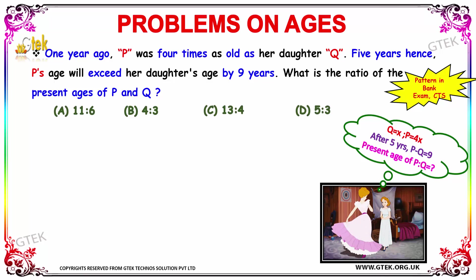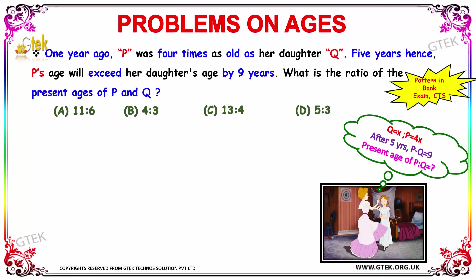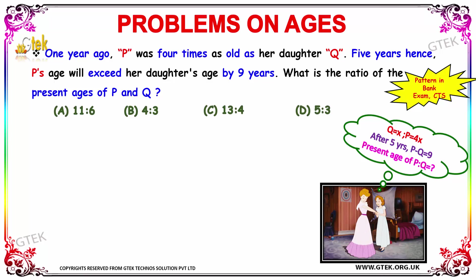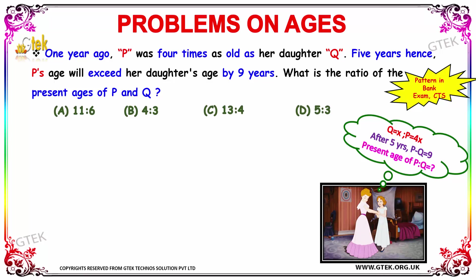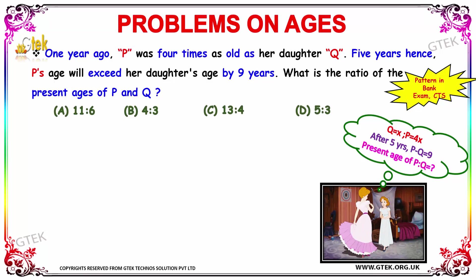It is given that 1 year ago, P was 4 times as old as her daughter Q. 5 years hence, P's age will exceed her daughter's age by 9 years. What will be the ratio of present ages of P and Q?